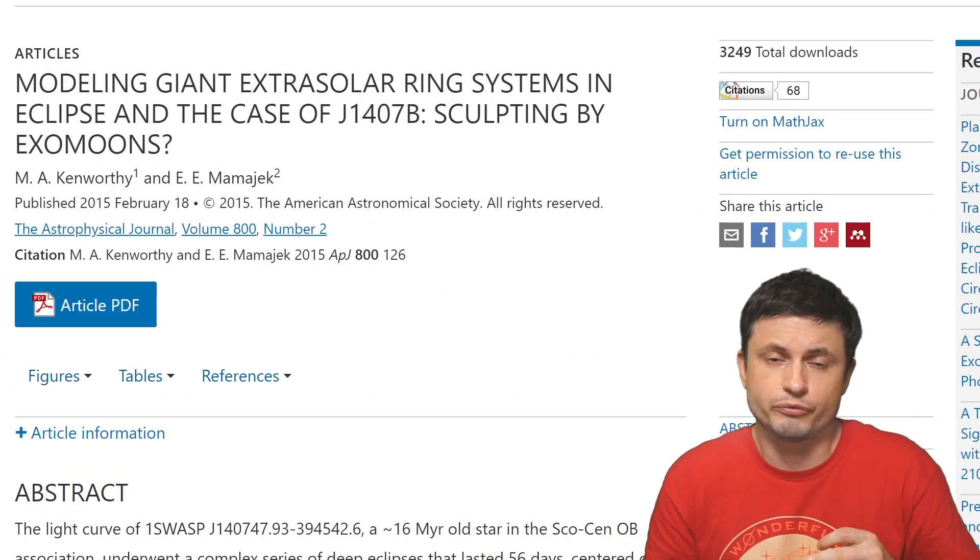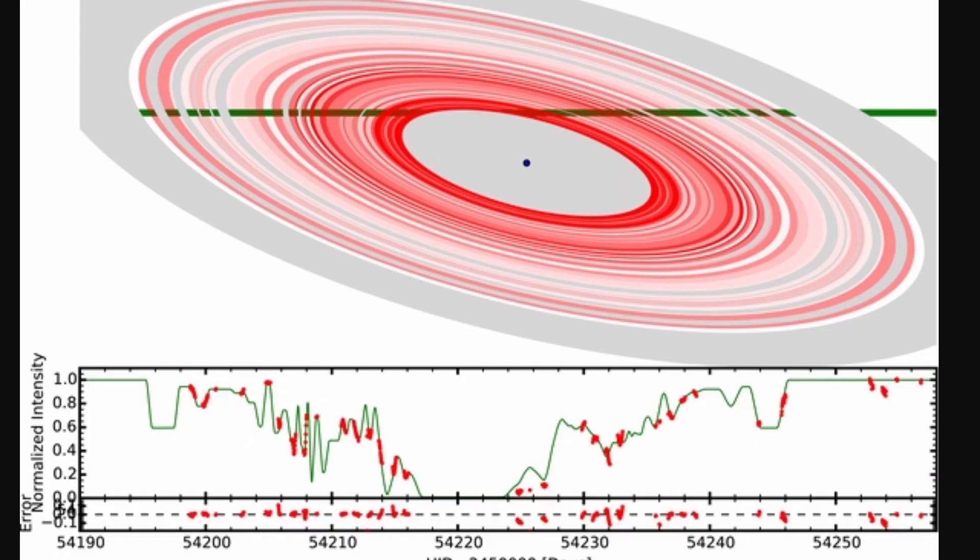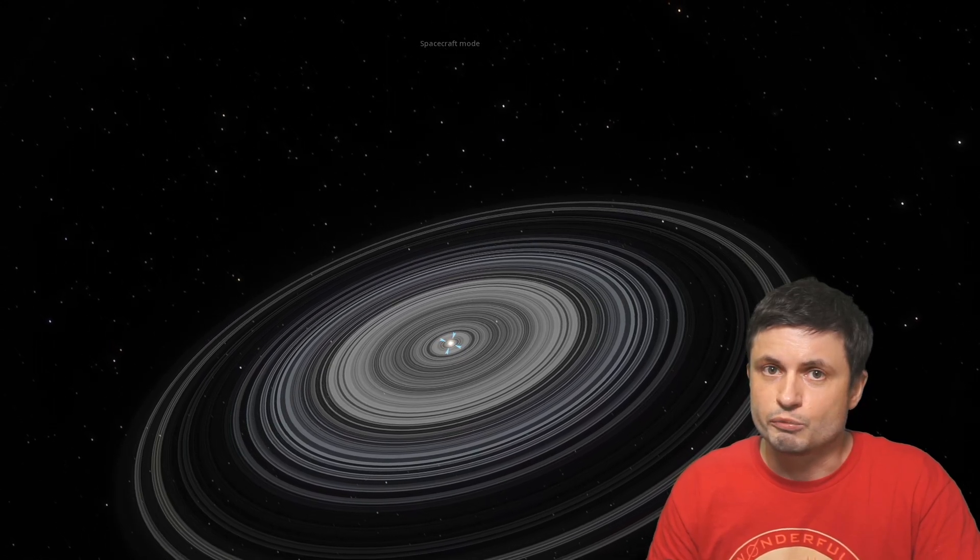By modeling the dips and trying to figure out exactly what they were showing us, the scientists behind the study realized that they were looking at enormous rings. And so it turns out that the Mammajax object was some sort of a giant ring planet. Very likely the biggest rings in the universe, or at least in our galaxy, or at least the biggest rings discovered so far. And how big is big?